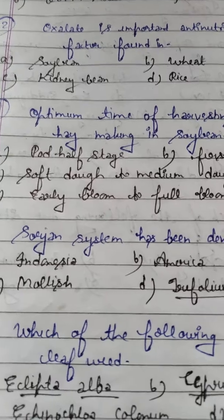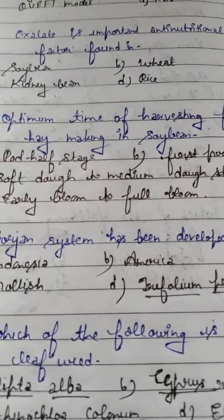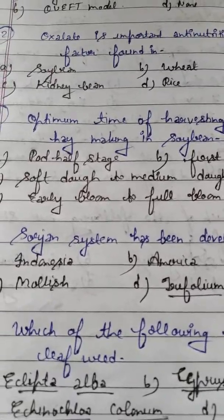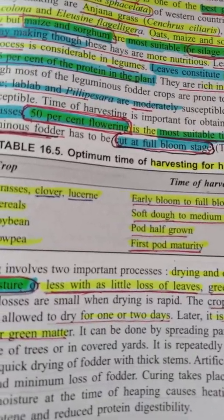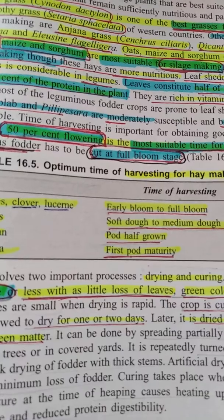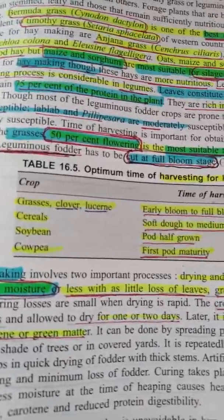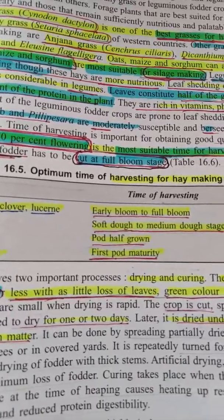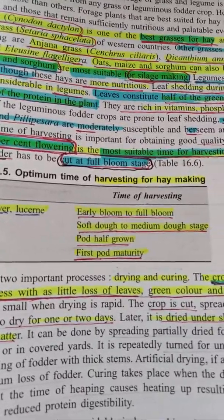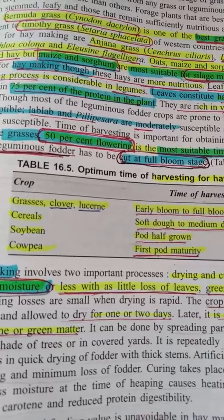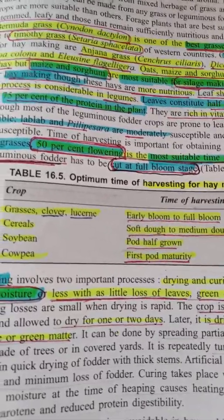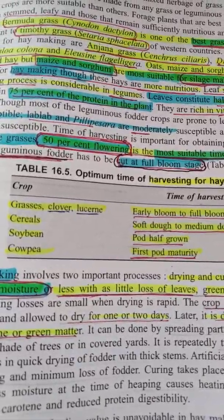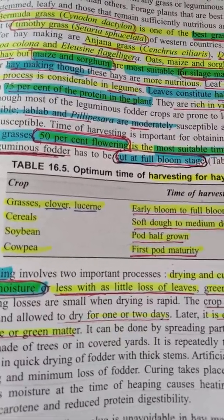This question is important. For grasses, clover, and lucerne, the time of harvesting for hay is early bloom to full bloom. For cereals, you harvest at soft dough to medium dough stage. For soybean hay making, it is pod half stage. And for cowpea, you harvest at first pod maturity. Please remember these.